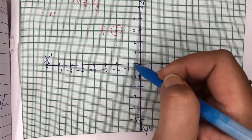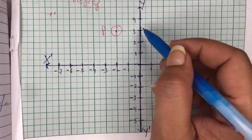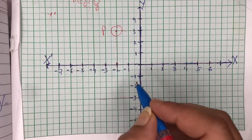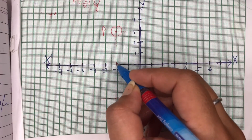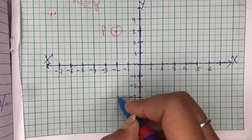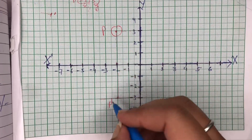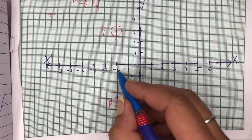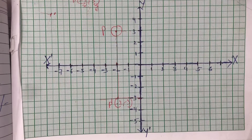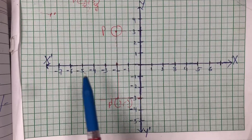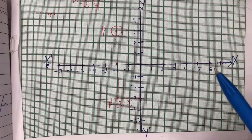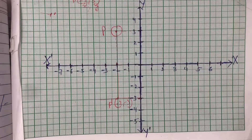Object is mirror se three units ke distance par hai. To behind the mirror bhi three units ke distance par ye image banegi. Aur agar baat karein X ki, to X ka to change hoga nahin — agar yahan par minus 2 hai to iske liye bhi minus 2 rahega. To ab image of P ke liye coordinate kya aa raha hai: X to change hoga nahin, Y change hokar kya hoga? Minus 3. To yahan se clear hota hai ke agar reflection in the X-axis hai, to X coordinate change nahin hoga, just Y coordinate change hoga — woh bhi sign ka farak aayega, aur kuch nahin.